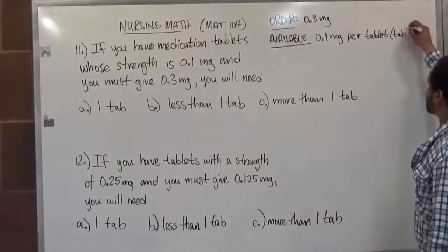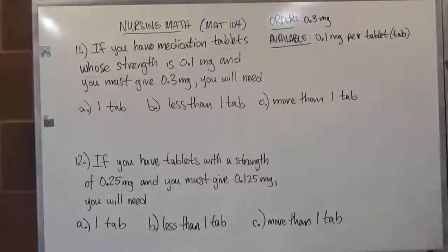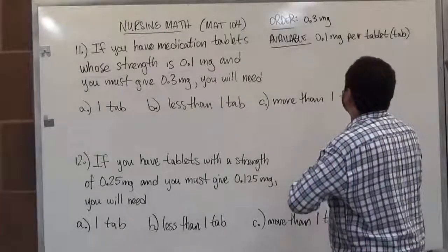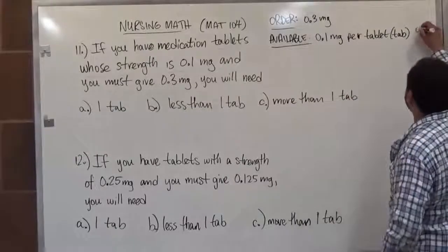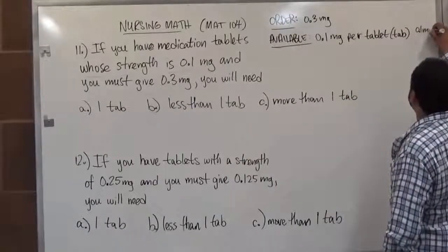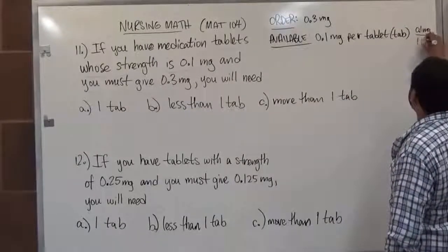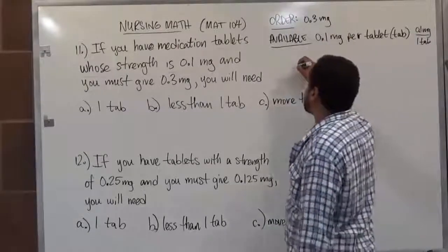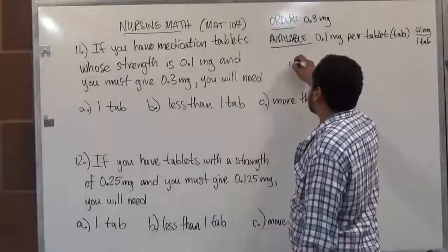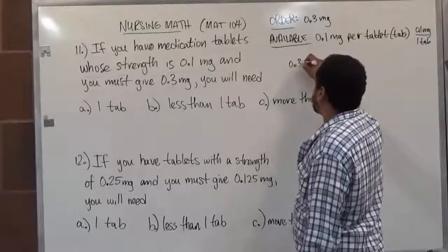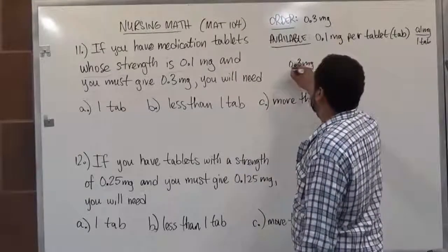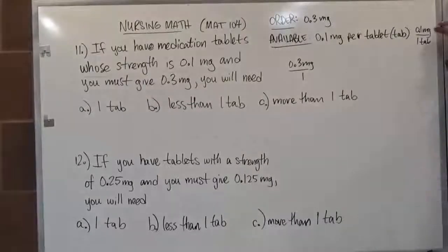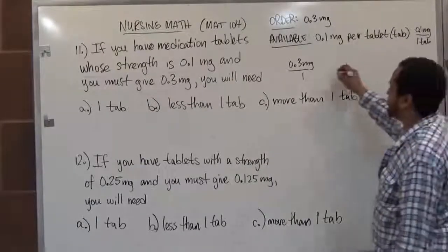We nickname this just 'tab' for short. So we have a fraction of 0.1 milligrams per one tab — this is our conversion factor. Our order always goes first: 0.3 milligrams as the numerator over 1, and we multiply by our conversion factor. Here we have 0.1 milligrams per tab.